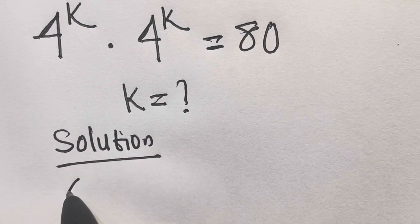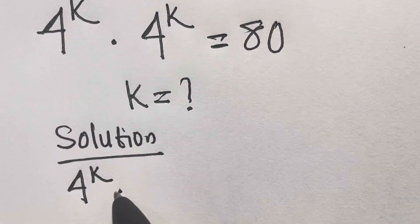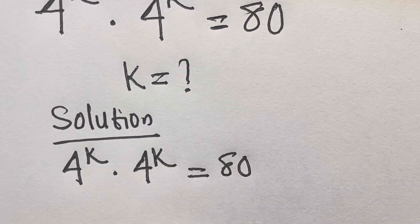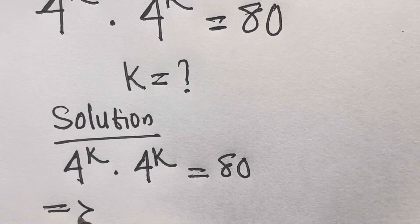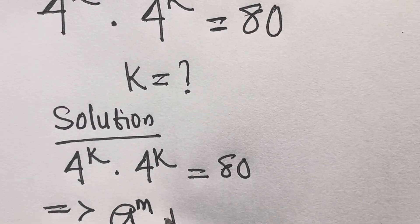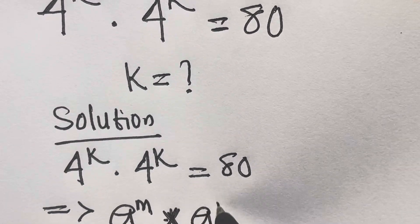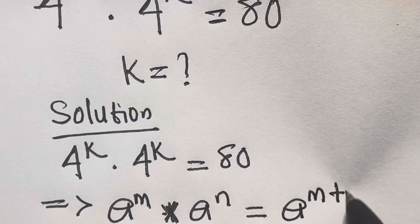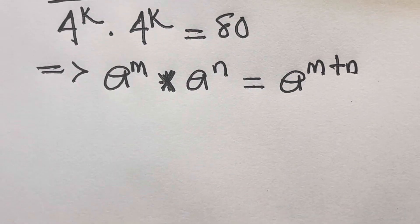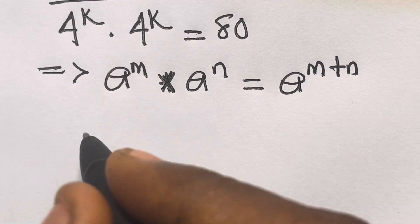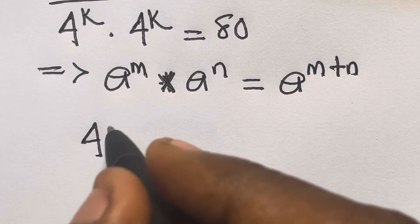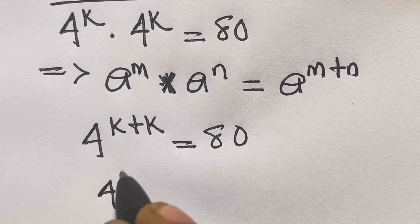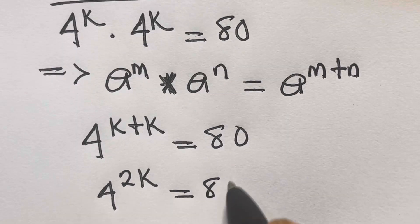We have 4 × 3^k times 4 × 3^k equals 80. Let's recall that if you have a × 3^m times a × 3^n, this equals a × 3^(m+n). So here we have 4 × 3^(k+k) equals 80, which gives us 4 × 3^(2k) equals 80.